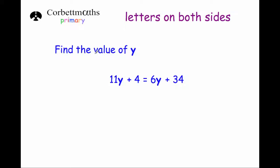The next example says find the value of y: 11y + 4 = 6y + 34. We have 11 y's and 6 y's; the lowest number is 6 y's, so we want to subtract 6y from both sides of the equation.